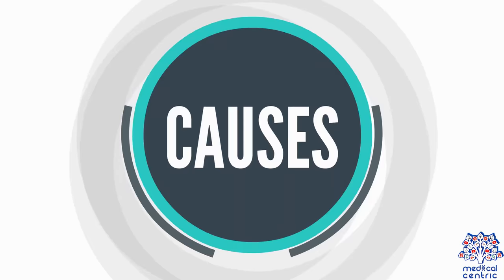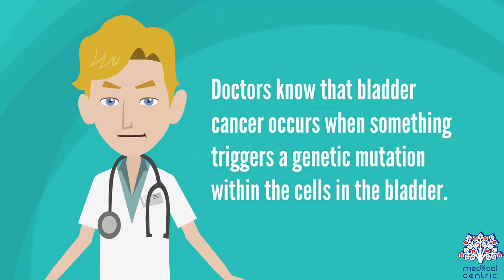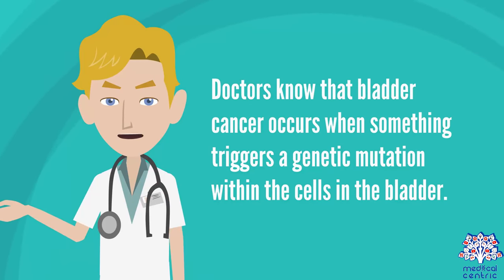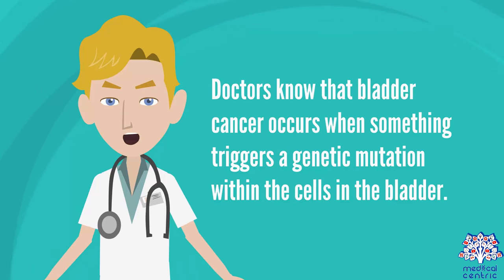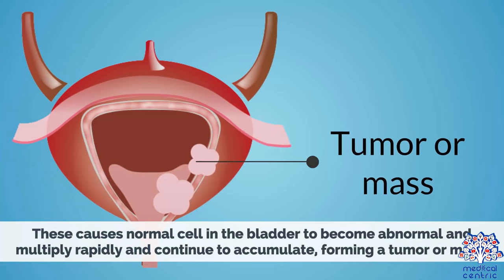Causes. Doctors know that bladder cancer occurs when something triggers a genetic mutation within the cells in the bladder. This causes normal cells in the bladder to become abnormal and multiply rapidly and continue to accumulate, forming a tumor or mass.